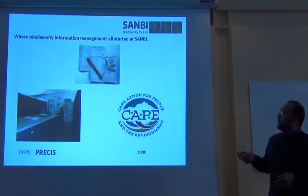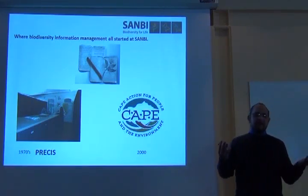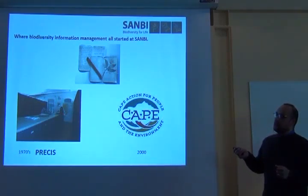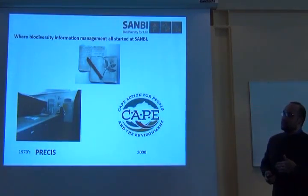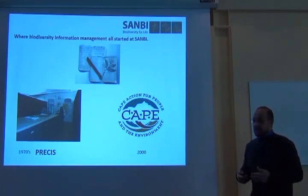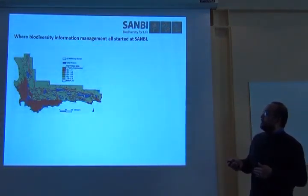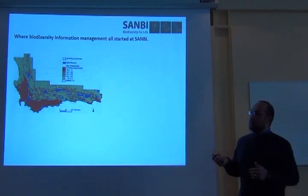At the time when Cape received the money, SANBI didn't exist. SANBI was a National Botanical Institute, and before that it was a research institute linked to agriculture — so it's got a long history. Over this long period of time, it culminated in what we have now in terms of the Biodiversity Act. There's a whole lot of work that went prior to the formation of SANBI.